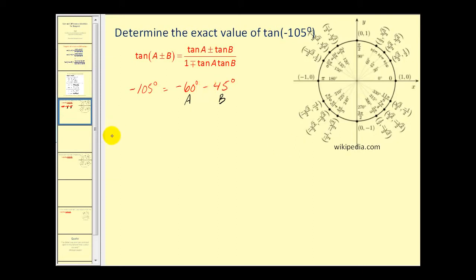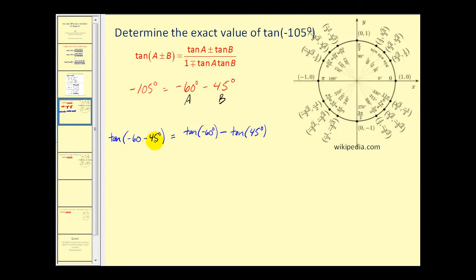Setting this up: the tangent of negative 60 minus 45 degrees equals tangent of negative 60 degrees minus tangent of 45 degrees — since we're using a subtraction sign, we use a subtraction sign in the numerator as well. The denominator is one plus tangent of negative 60 degrees times tangent of 45 degrees.